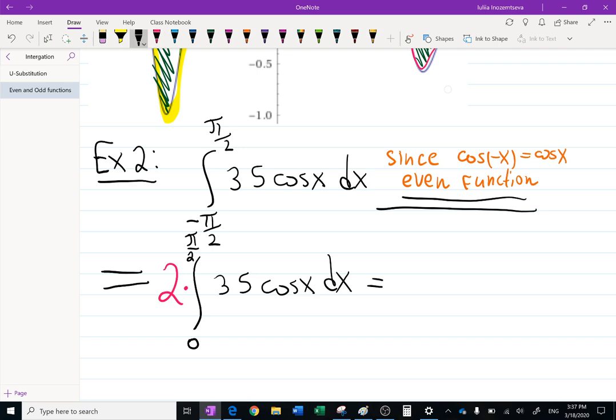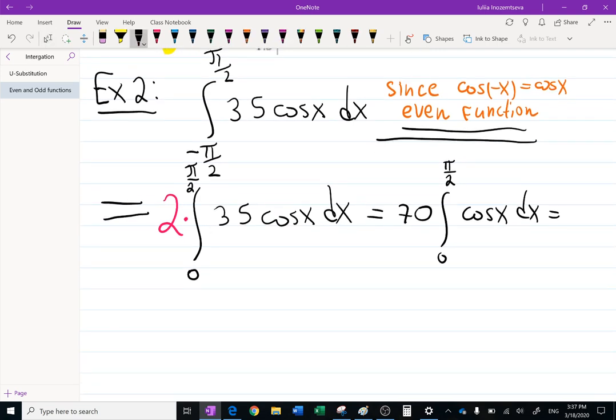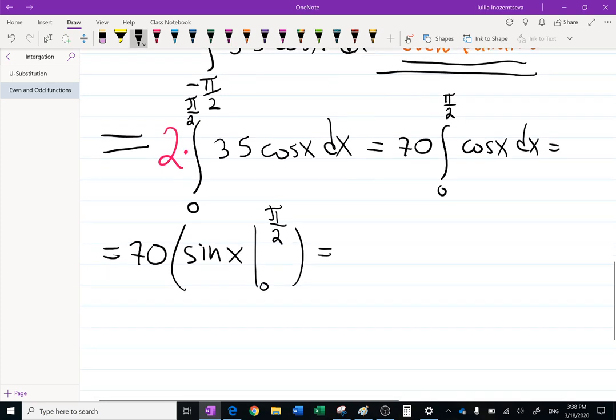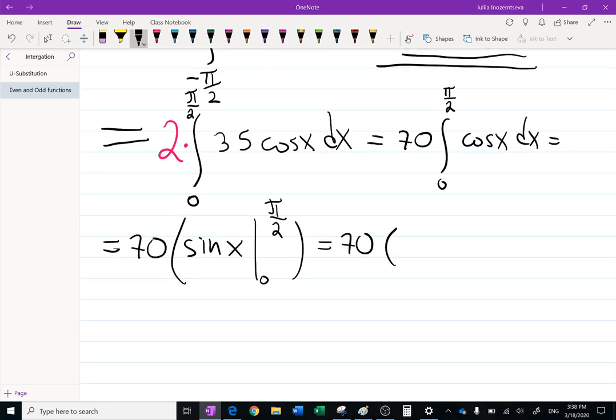So actually we're just integrating 70, because 2 times 35 is 70, integral from zero to pi over 2 of cosine x dx. What is the integral of cosine? Is it sine or negative sine? Always differentiate in your mind. The derivative of sine is plus cosine, so the integral of cosine is plus sine. That means I'm having sine x here and an integral from zero to pi over 2, not from negative pi over 2 to pi over 2, which makes it a little bit easier because you don't have to deal with negative signs anymore. And I will have 70. Sine of pi over 2 is 1, sine of zero is 0, so the answer is 70. Nice and fast.